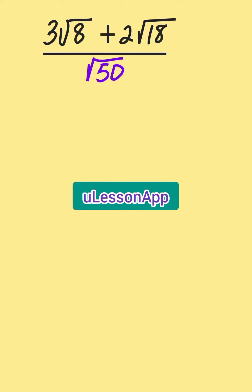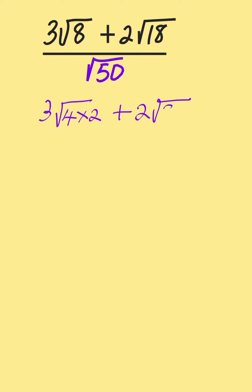We have 3√8 + 2√18 all over √50. This is the same as 3√(4×2) + 2√(9×2) all over √(25×2).